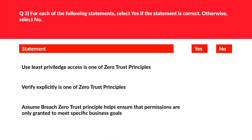This question is related to Zero Trust principles. You need to be familiar with these concepts as they are very important for Azure security. Option A: 'Use least privilege access' is one of the Zero Trust principles. Least privilege access helps ensure that permissions are only granted to meet specific business goals from the appropriate environment and on appropriate devices. This is true, so we'll mark this as Yes. Option B: 'Verify explicitly' is one of the Zero Trust principles.